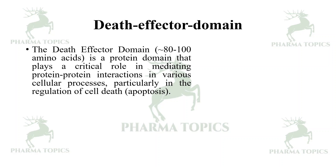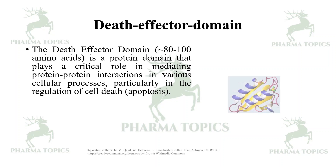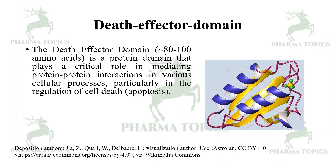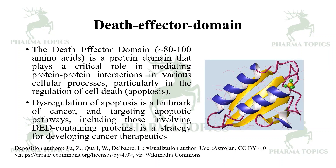The next is the death effector domain (DED), which has approximately 80 to 100 amino acids. It is a protein domain that plays a critical role in mediating protein-protein interactions in various cellular processes, particularly in the regulation of cell apoptosis, that is programmed cell death. The DED domain is involved in the regulation of apoptosis, which is a hallmark of cancer.